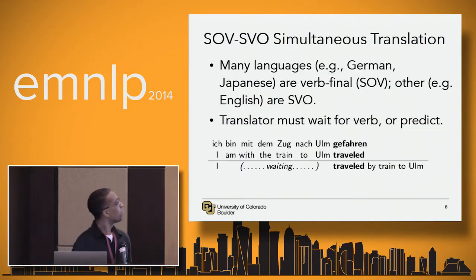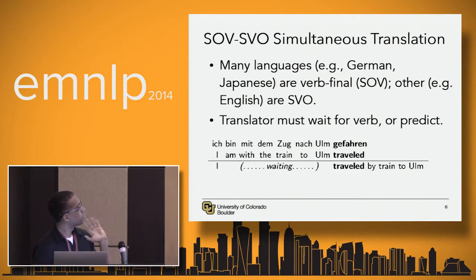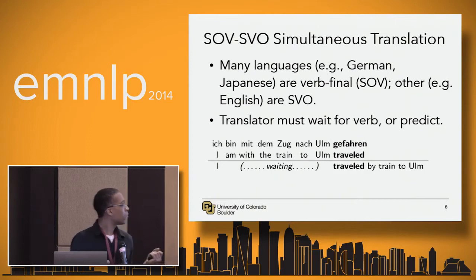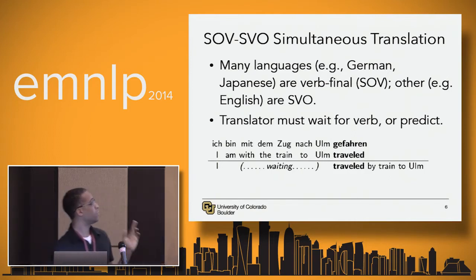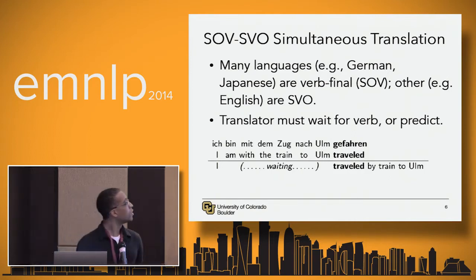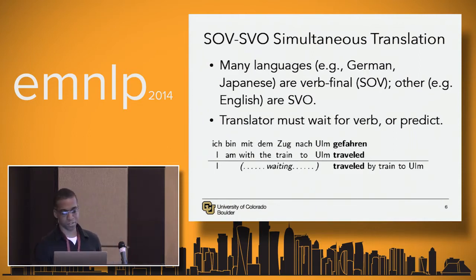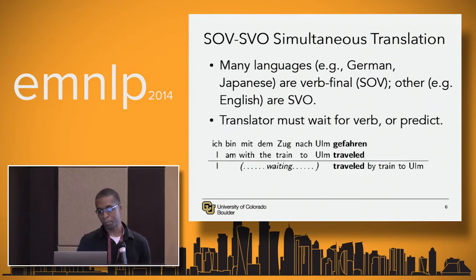By SOV to SVO, I mean subject-object-verb to subject-verb-object. The vast majority of languages fall into one of these two categories. German, for example, is often SOV. English is almost always SVO.